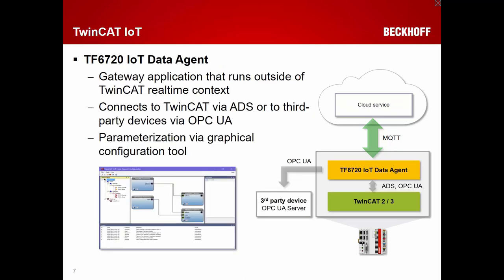The next product is the IoT Data Agent, TF6720. It's a gateway application that runs outside the TwinCAT PLC real-time context, installed on a Windows computer. It can connect to TwinCAT 2 or TwinCAT 3 via ADS, and also has an OPC UA client to connect to the TwinCAT OPC UA server or to third-party devices that have an OPC UA server on board.